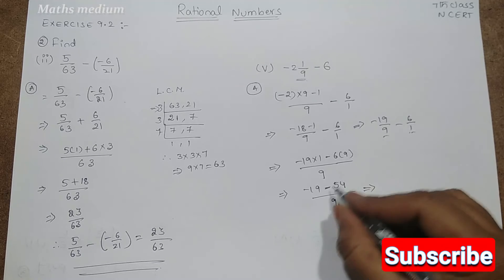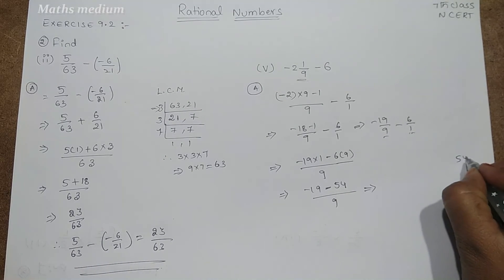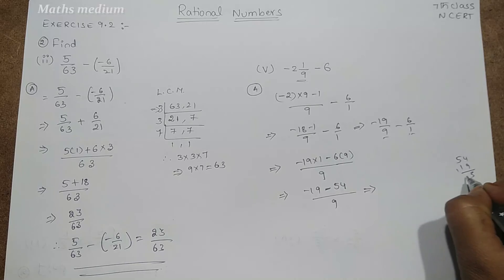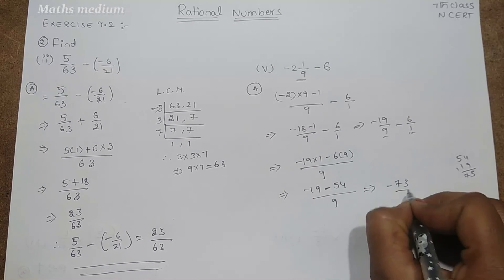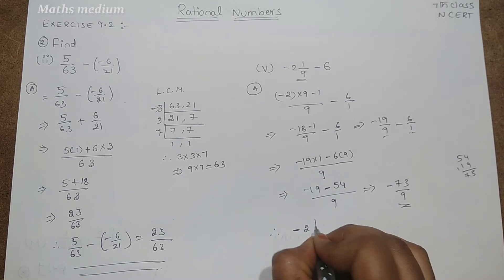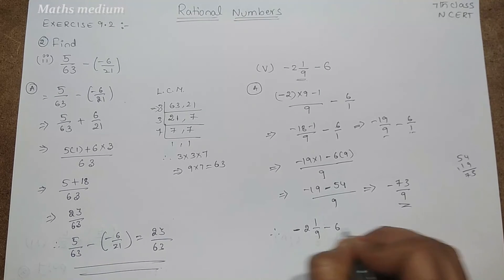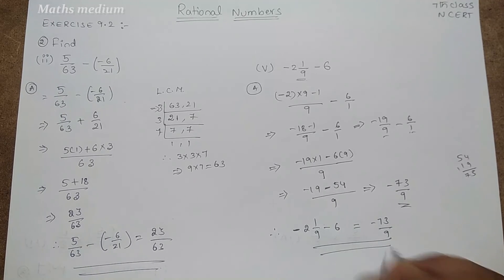So the answer is 54 plus 19. See 54 plus 19 is 73. So minus 73 by 9 is the answer for this question.